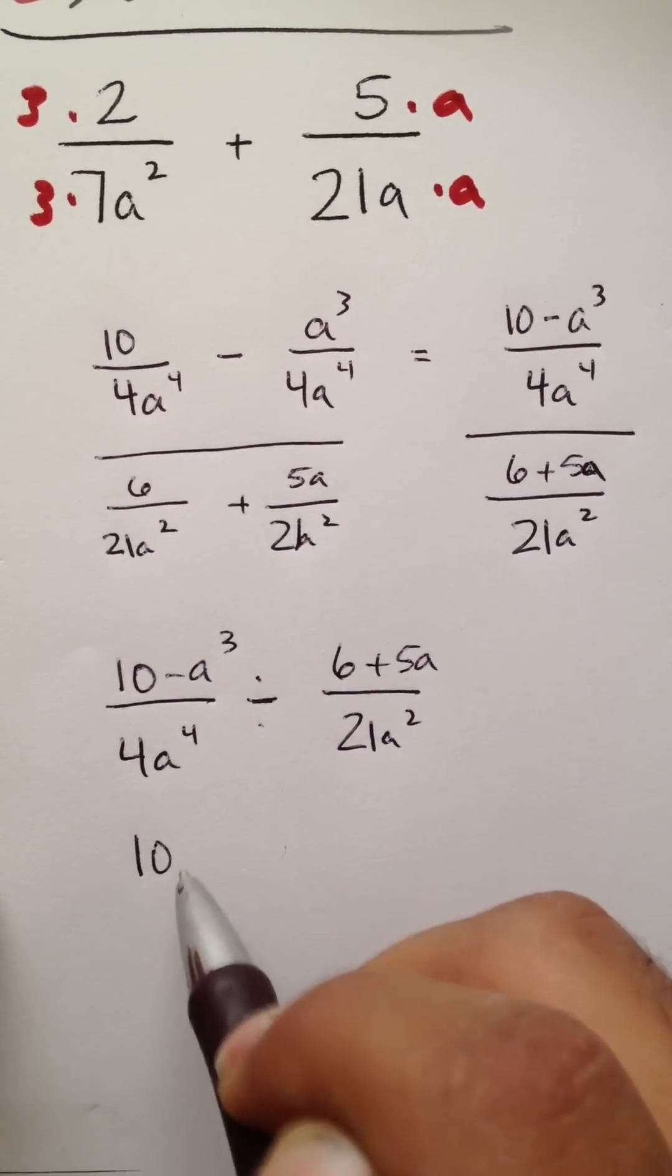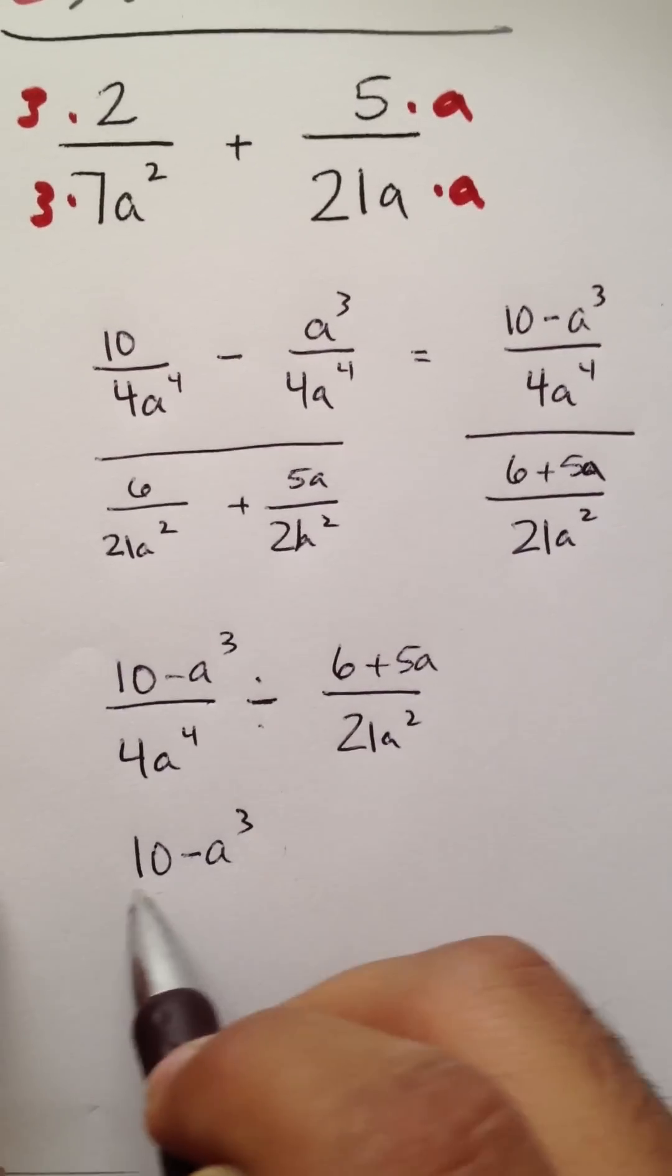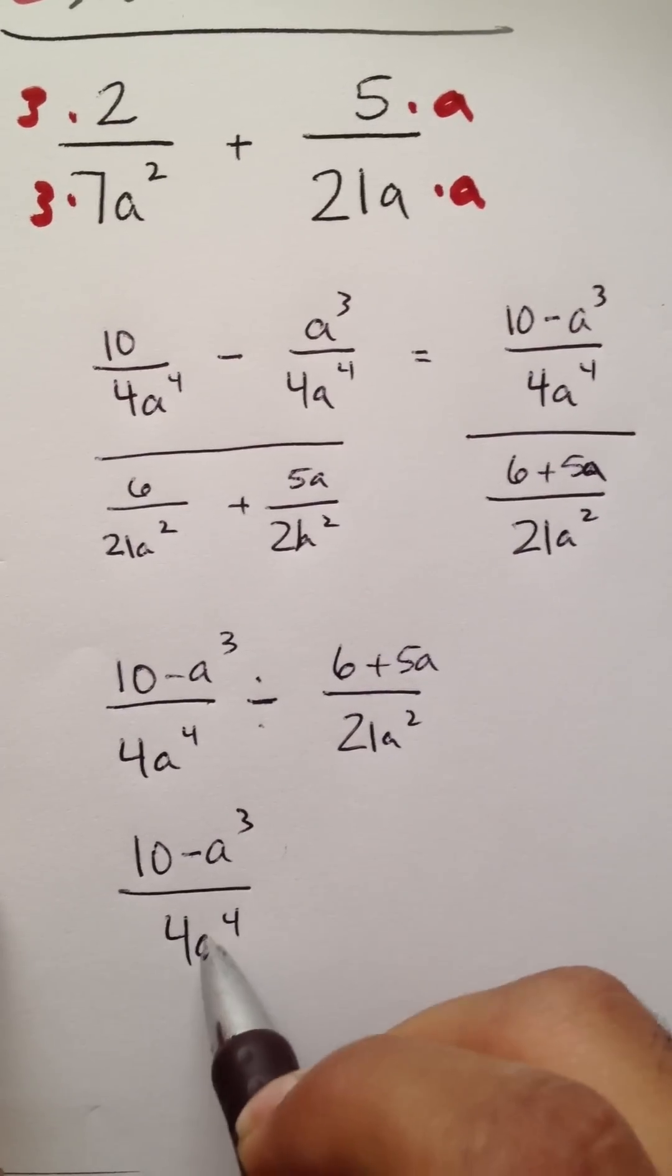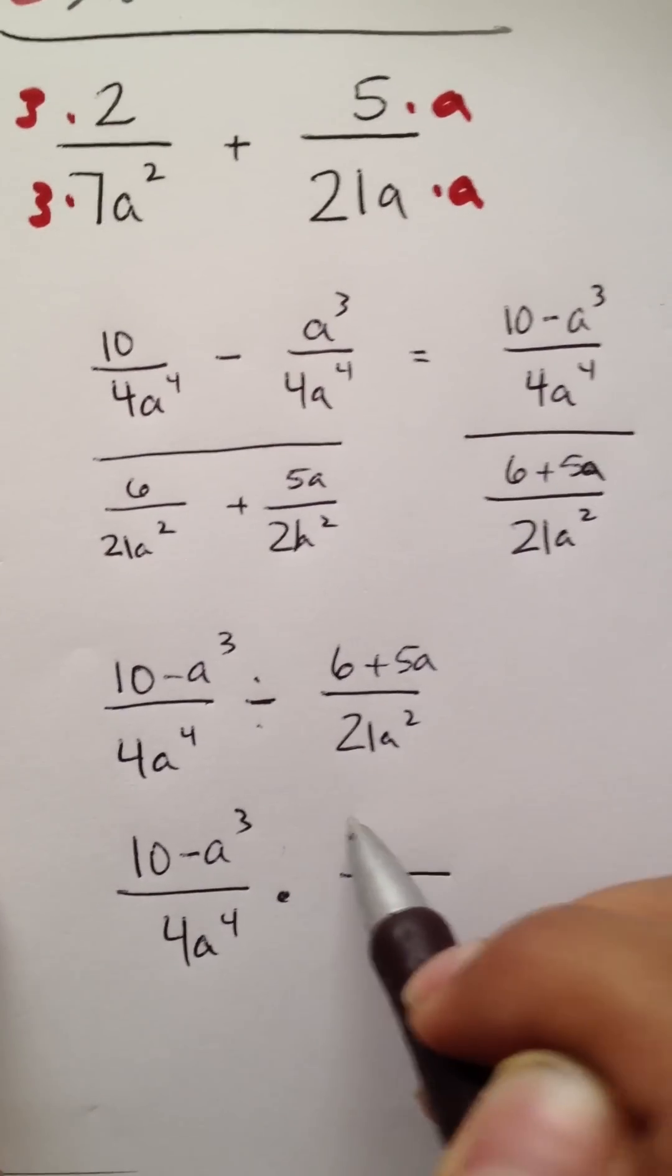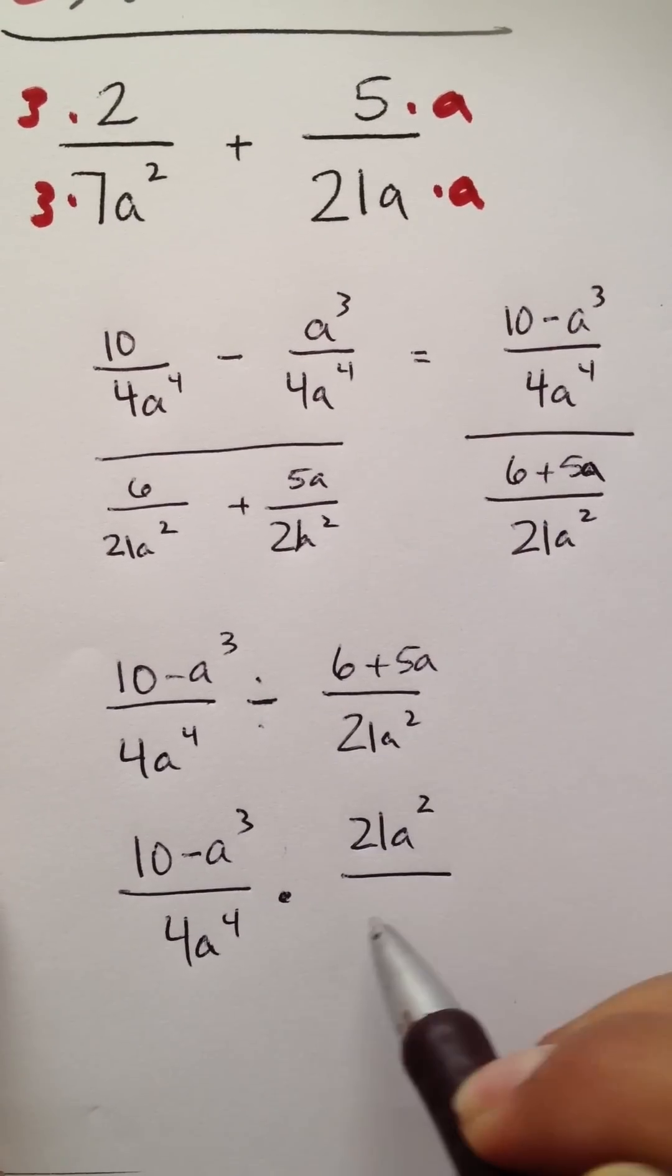We understand this to be 10 minus a to the third power on top of 4a to the fourth power, multiplied by the reciprocal. And this is how we divide fractions.